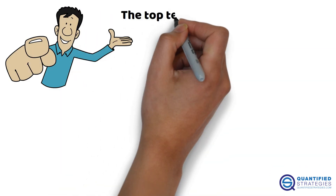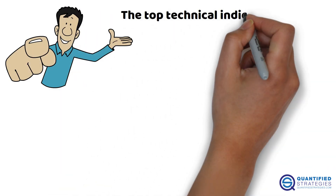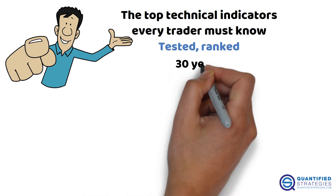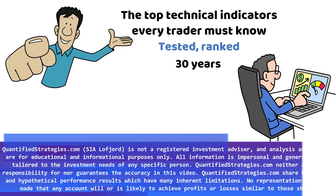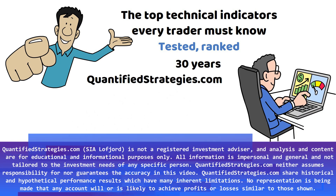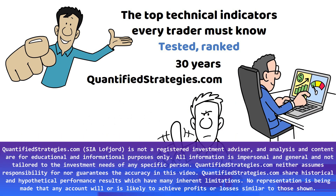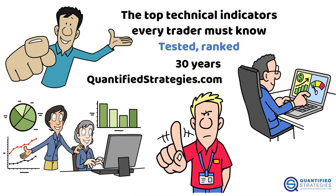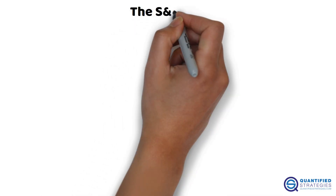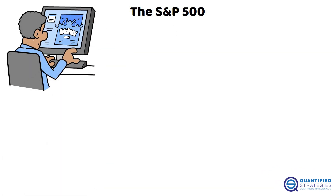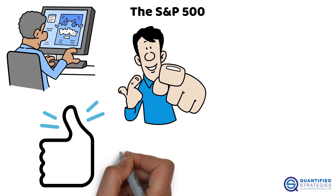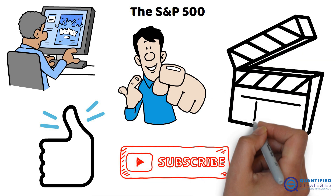Today we're diving into the top technical indicators every trader must know — tested, ranked, and backed by over 30 years of market data from quantifiedstrategies.com. These aren't just popular indicators. They're the ones that have proven themselves in real-world trading on the S&P 500 across different market conditions. Make sure to like and subscribe so you don't miss more videos like this one.